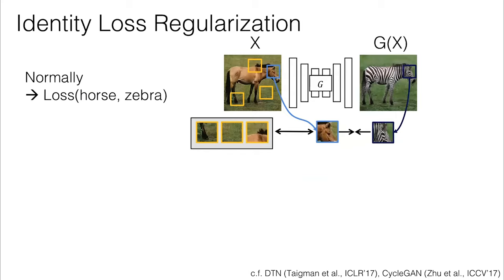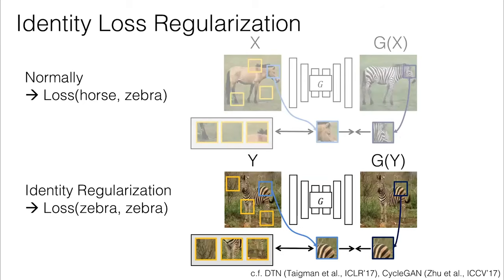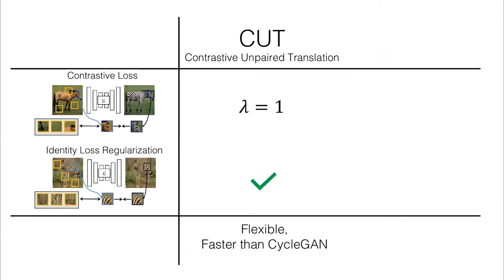There's one more additional term. What we've proposed so far is a contrastive loss between the input horse and the output zebra. There's another trick called identity regularization, where you can take a ground truth zebra, put it in the generator, and put the same loss on the input and output. This is to discourage it from making unnecessary changes. If you already have a zebra in, you should be more conservative. Our full system has both these losses, both for the horse as well as the identity loss regularization. We call it contrastive unpaired translation, or CUT for short.